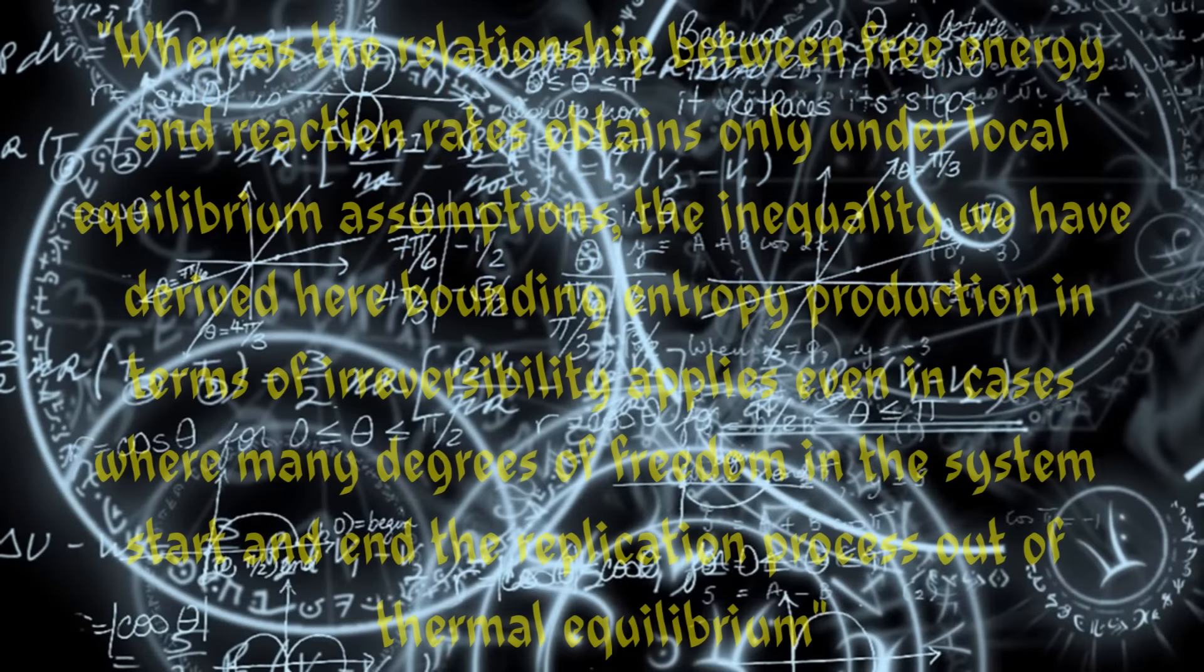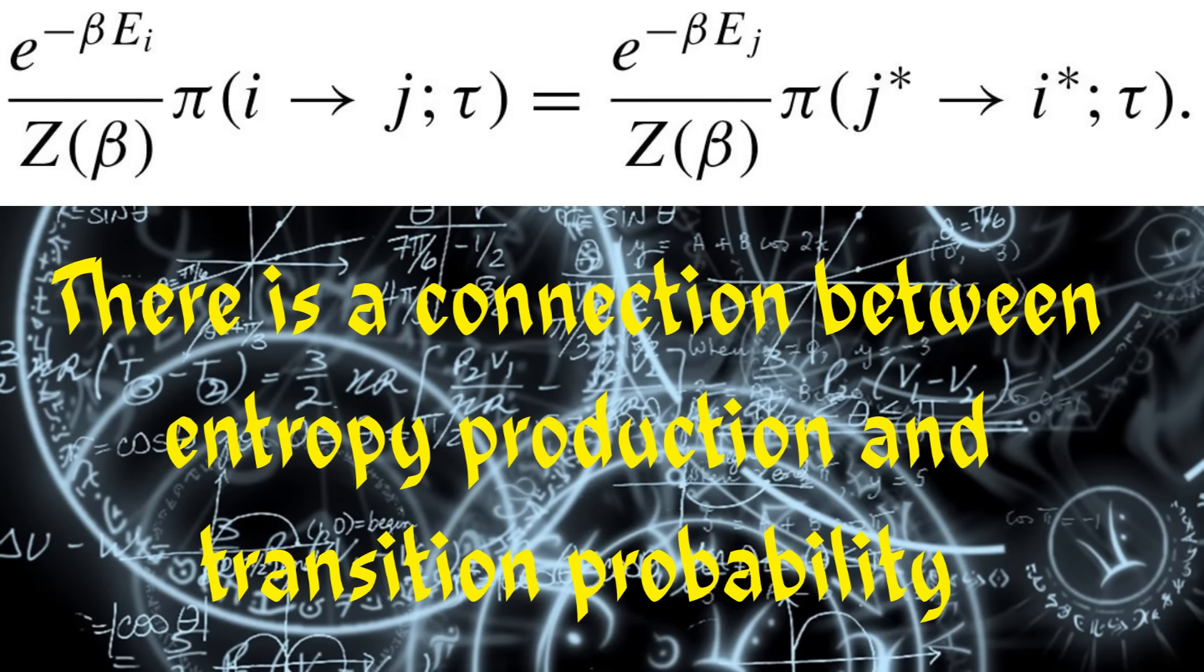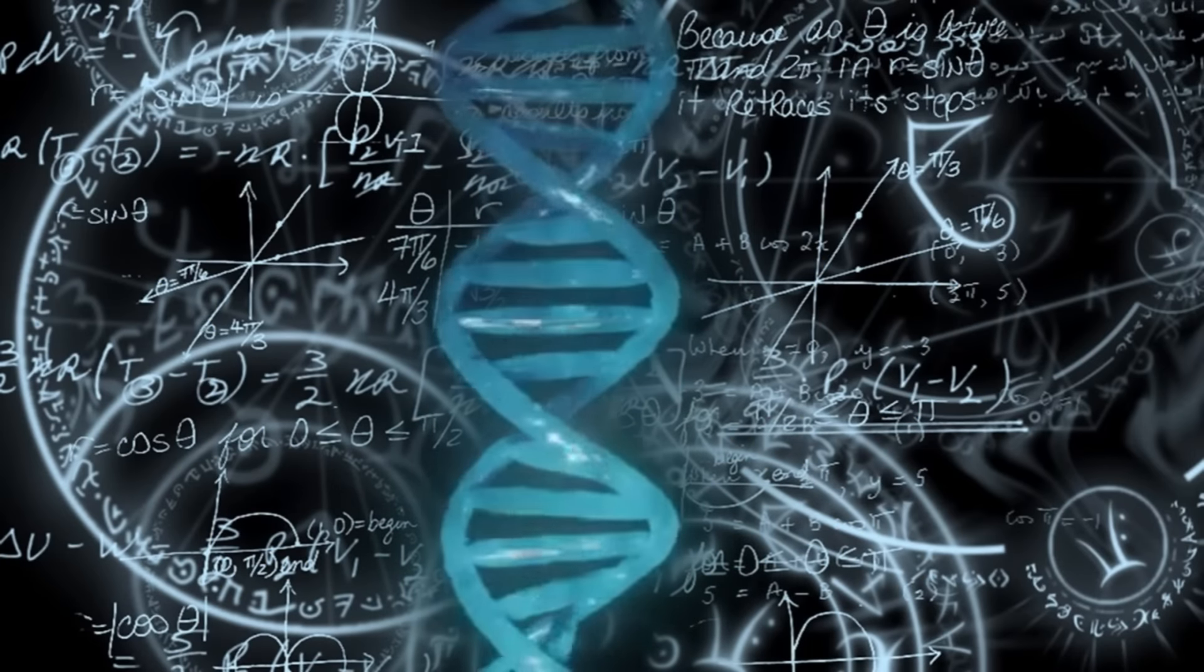An activation barrier that is lower in the forward direction will be lower in the reverse direction as well. The key point here, however, is that whereas the relationship between free energy and reaction rates obtains only under local equilibrium assumptions, the inequality we have derived here bounding entropy production in terms of irreversibility applies even in cases where many degrees of freedom in the system start and end the replication process out of thermal equilibrium. We have glimpsed here that the underlying connection between entropy production and transition probability has a much more general applicability, so long as we recognize that self-replication is only visible once an observer decides how to classify the self in the system.